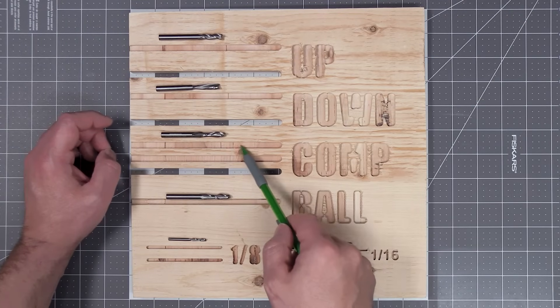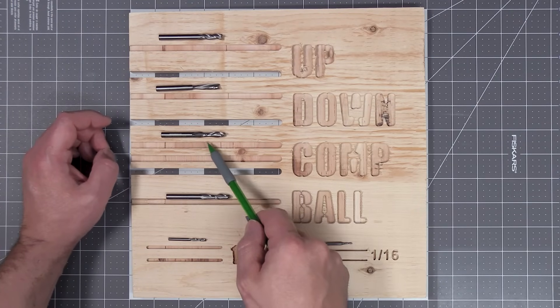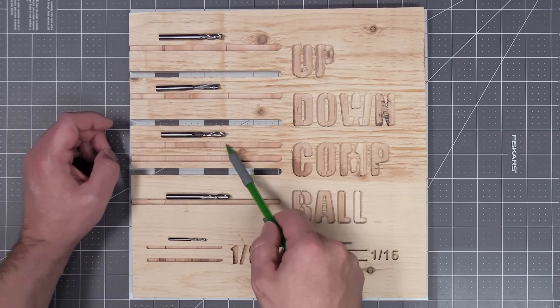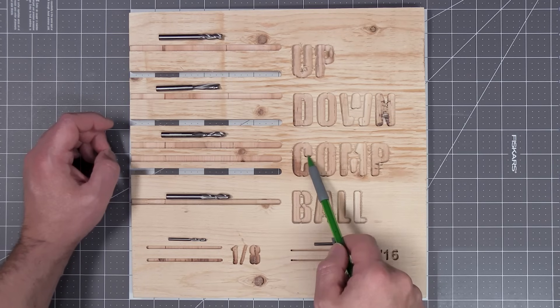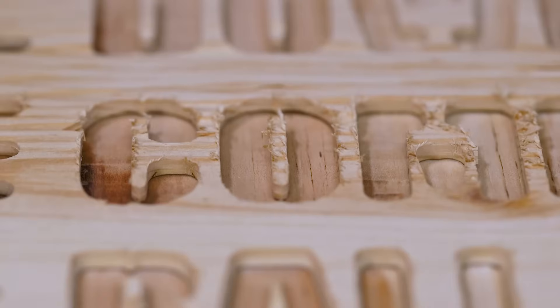In order to show you how this bit works, I set it up so the first horizontal line and the lettering were cut with a starting depth of about an eighth of an inch. This is to show you that if you don't set up your initial depth deep enough, this bit will still cause tear out.